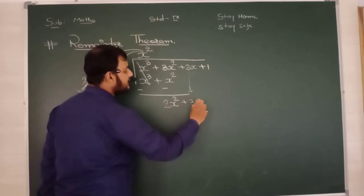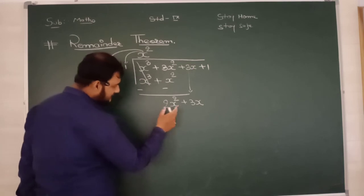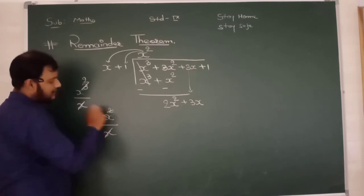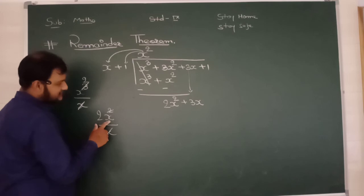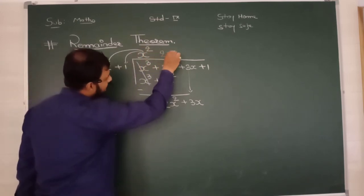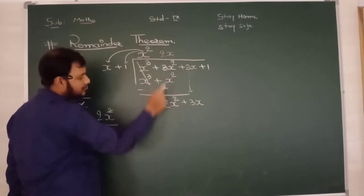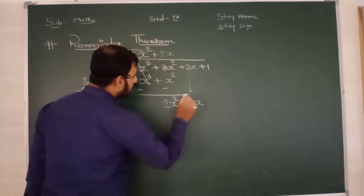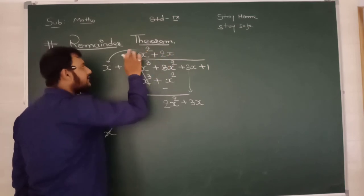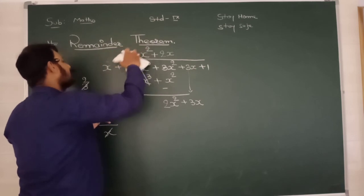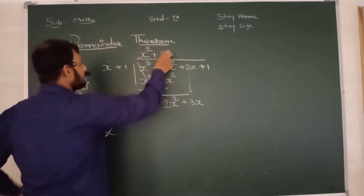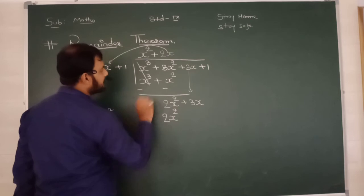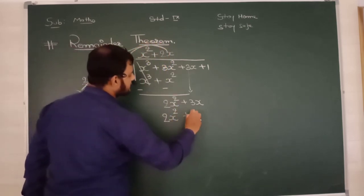Now this step will come down: plus 3x. आपको क्या करना? यहाँ का पहला digit जो लेना है वो है 2x², और यहाँ पे x. So एक x cut हो गया, क्या बचा? 2x. वो आपको यहाँ पे लिखना है: 2x. Now which sign will be there? Positive - then here sign will also be positive. Again same thing: 2x will be multiplied with x, so that is 2x². This 2x will be multiplied with 1, so that is 2x.